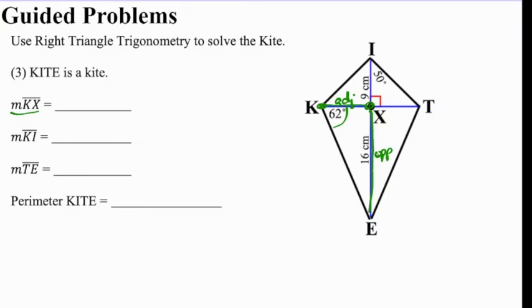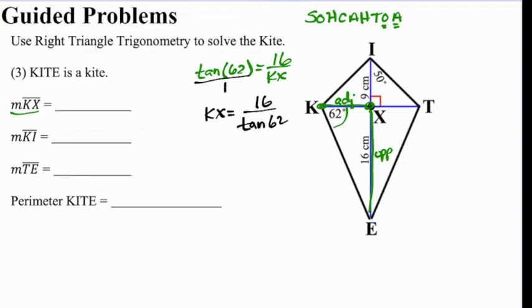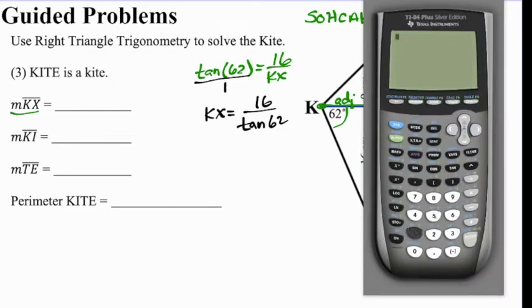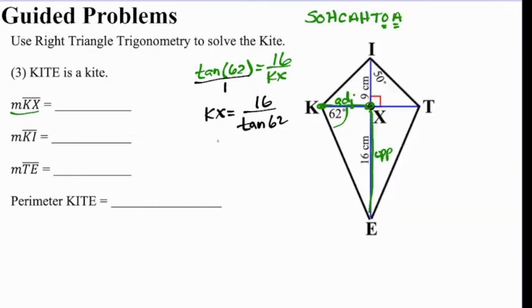KX is adjacent to 62 degrees and 16 is opposite. Opposite and adjacent is going to be tangent if we look at SOHCAHTOA. Here we have opposite and adjacent, the O and the A. So we're going to write tangent of 62 degrees equals opposite, which is 16, over adjacent, which is KX. And then our strategy is to write it as a proportion and cross multiply. We get KX is equal to 16 divided by tangent of 62. We can plug this into our calculator. 16 divided by tangent of 62 is 8.5. So KX is 8.5, and I'm just rounding everything to the nearest tenths.